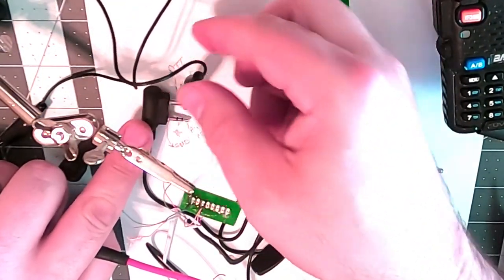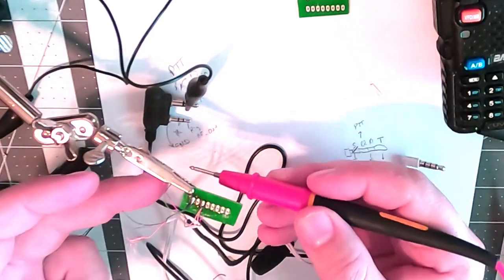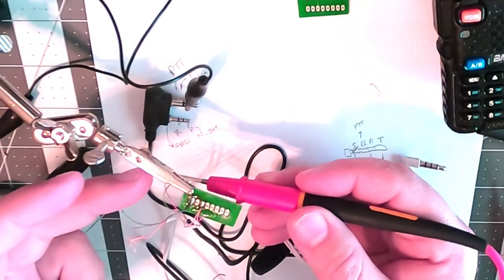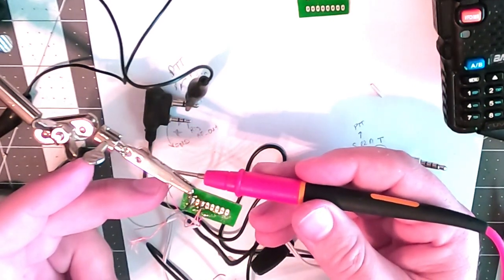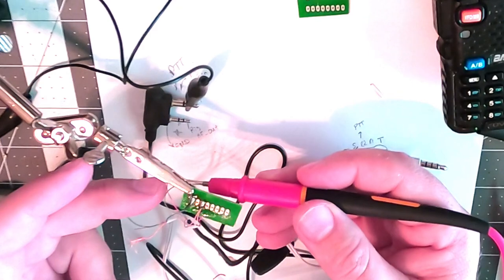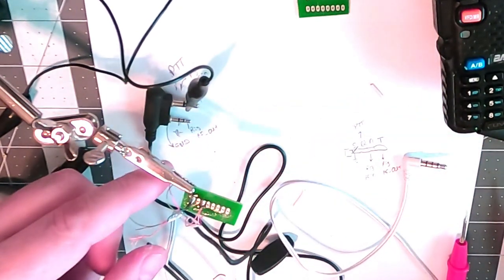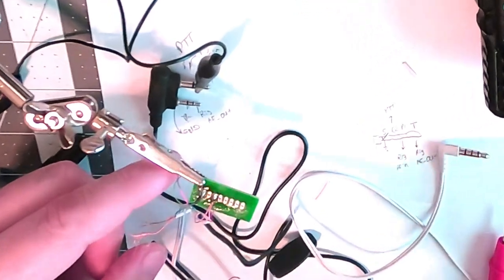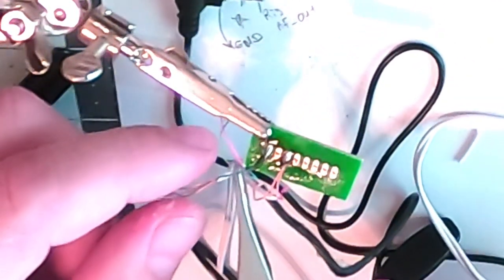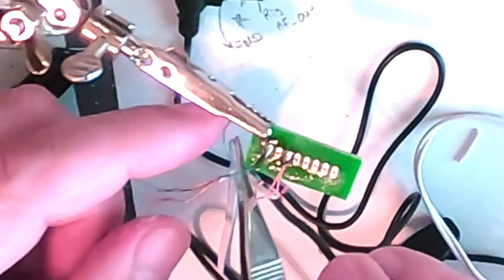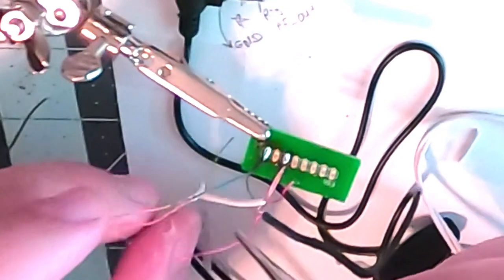We should only have two wires left on the black one to check. So it's this one. Going to use the tweezers to pull it through.